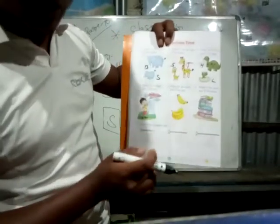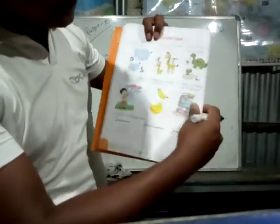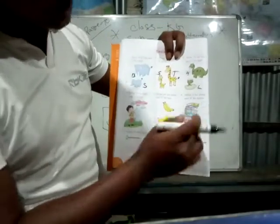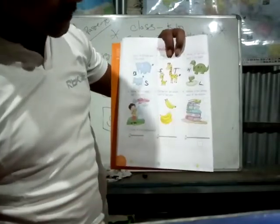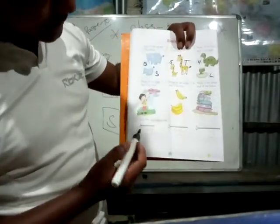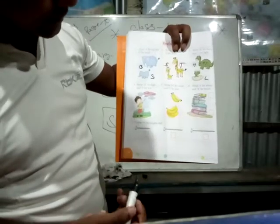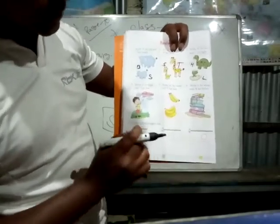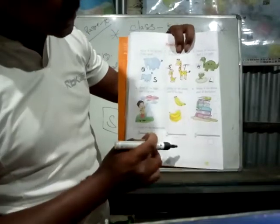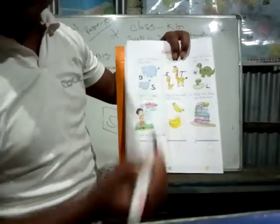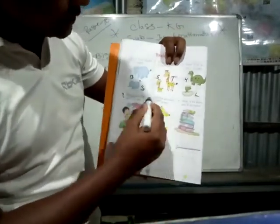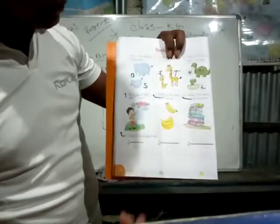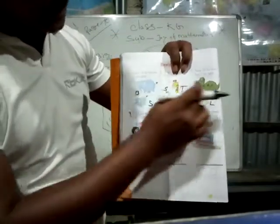Here M for More, L for Less — you have to find which one is less and which one is more. Then A for Above, B for Below — which is above and which is below, you can write yourself easily. Here, circle the longest nail. One, two, three are there — which is the longest one you see, and then circle it.